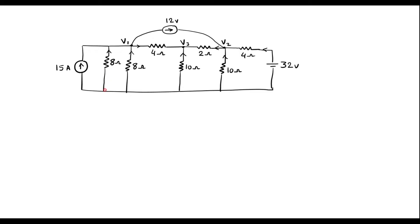In the node analysis method, we can observe that this is one node. Let the voltage at this node be V1, voltage at this node be V2, and voltage at this node be V3. The current directions are shown in the circuit. Let this be I1, this is I2, this is I3, I4, I5, I6, and this is I7.